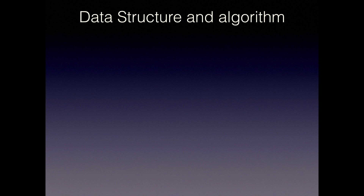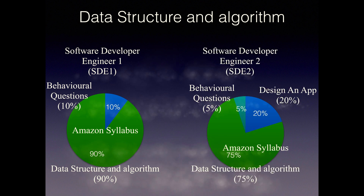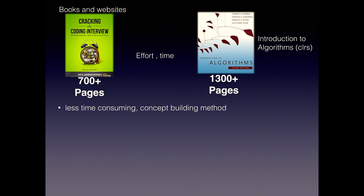The Data Structures and Algorithm syllabus covers 90% of Amazon Interview topics for Software Developer Engineer 1, and 75% for Software Developer Engineer 2. There are many books and websites you can refer to, like Cracking the Coding Interview, Introduction to Algorithms, and CLRS, but these books contain too many pages and require a lot of effort and time.